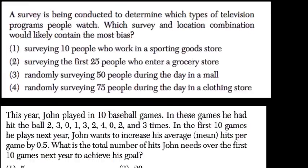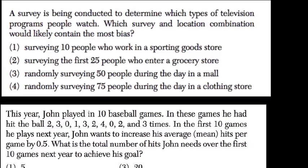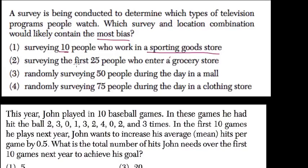A survey is being conducted to determine which types of television programs people watch. Which survey and location combination would likely contain the most bias? Usually the smallest group is the worst because they'll represent the smallest amount of people. If you're only asking ten people who work in a sporting goods store what they want to watch, they're really going to say things that relate to the theme of the store — that's going to be extremely biased. Twenty-five people entering a grocery store is a larger sample size and less biased, since many people from different walks of life shop at grocery stores.